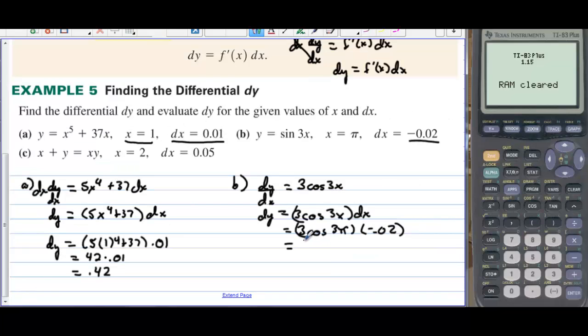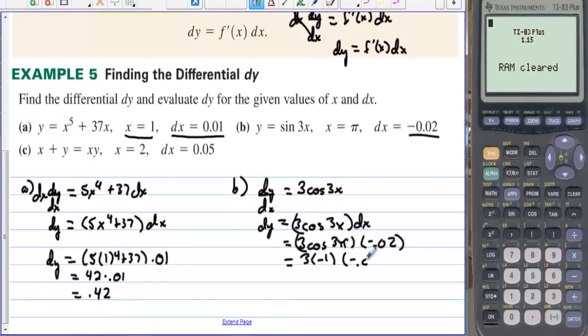3 times cosine of 3 pi is 3 times negative 1, and then times negative 0.02. We have negative 3 times negative 0.02, that's equal to 0.06.